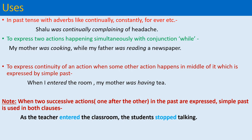The next use of past continuous tense is to express the continuity of an action when some other action happens in the middle of it, which is expressed by simple past tense. Here we denote two activities — one is going on, and in the middle of it some other activity happens. You should also note that when two successive actions happen one after another in the past, we use simple past tense in both clauses. For example, 'As the teacher entered the classroom, the student stopped talking.'